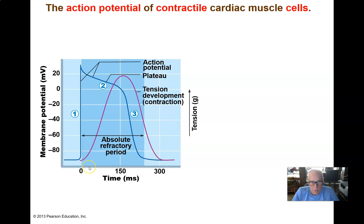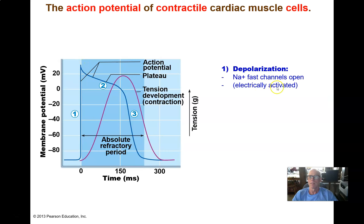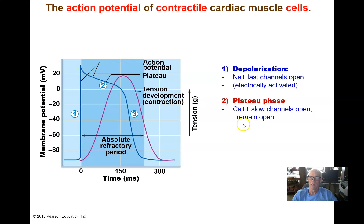A heart muscle cell may have a resting membrane potential of minus 90 millivolts. If we trigger an action potential — ions passing from a neighboring cell through gap junctions — we get rapid depolarization due to sodium fast channels, the same kind we've seen on neuron axons and skeletal muscle cells. Sodium channels open, sodium ions rush in and depolarize the cell. Those sodium channels then inactivate, just as before, but cardiomyocytes have a different channel — a calcium slow channel — and those calcium channels stay open for a long, long time, hence the long refractory period.